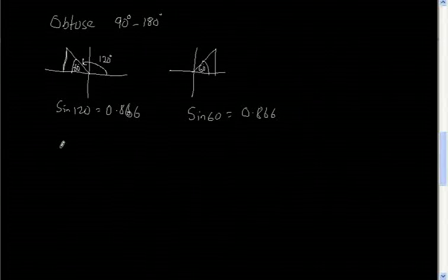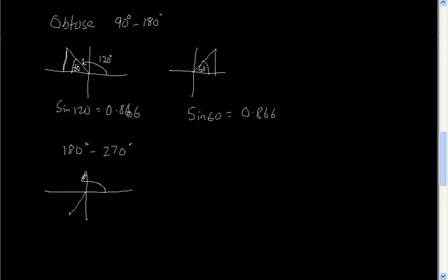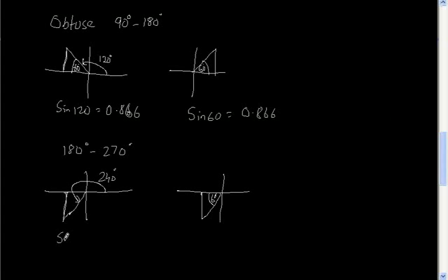Now let's look at an angle that falls in the third quadrant — that would be between 180 and 270 degrees. Let's say the angle is 240 degrees. If that is 240 degrees, the acute angle equivalent made with the horizontal would be 60 degrees, because all of that up to 180, and then 60 more gets you to 240. So the triangle has the same dimensions, meaning sine 240 is equivalent to sine 60, which is 0.866.